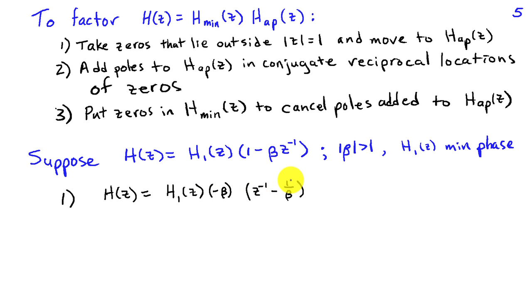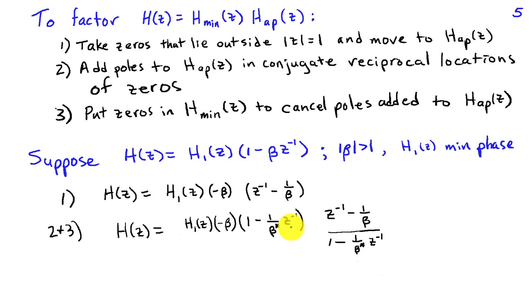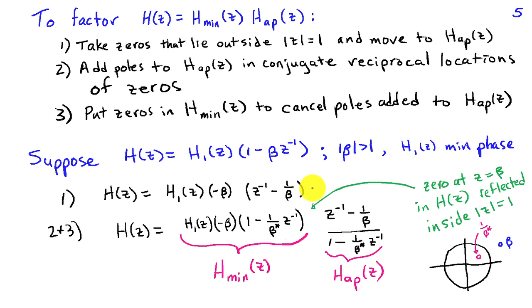We've put the zero into H_allpass in the first step. For the second and third steps, we put a pole into the all-pass term at the conjugate reciprocal location of the zero, which is at 1 over β conjugate. When we introduce this pole, to keep the equality we also introduce a zero at 1 over β conjugate. This zero is inside the unit circle, whereas the original zero was outside. So now we have our decomposition.